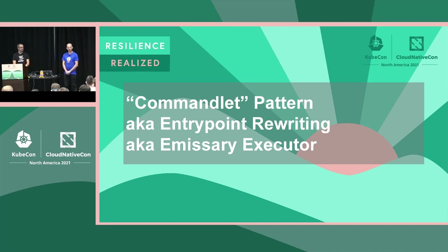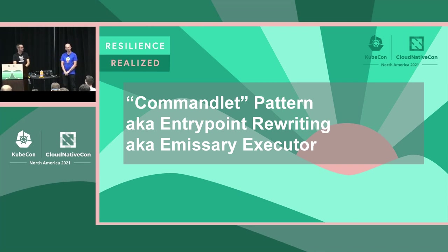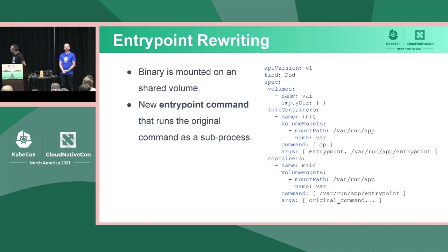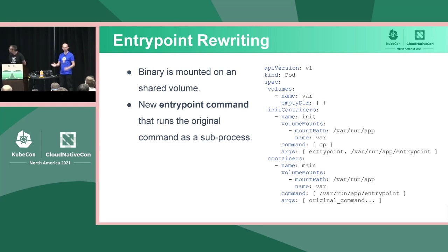The primary way we do this is what we've termed the command loop pattern — you probably know it in Tekton as entrypoint rewriting, or in Argo Workflows as the emissary executor, which is heavily influenced by Tekton. What we do is replace the user's command with our own command that forks the user's command as a subprocess. We use an init container that shares an empty directory volume with the main container, copies a binary onto that volume, which is then available in the main container without needing to be baked into the image.